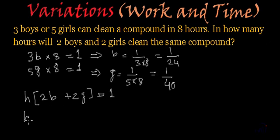So we will have H multiplied by 2B will be equal to 2 by 24, value of B is 1 by 24, similarly 2G will be equal to 2 by 40 and this is equal to 1.